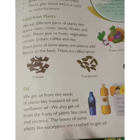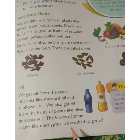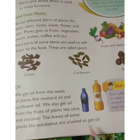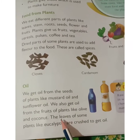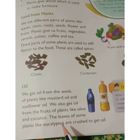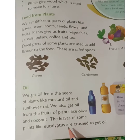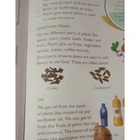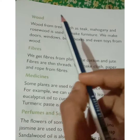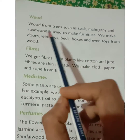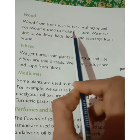The leaves of some plants like eucalyptus are crushed to get oil.